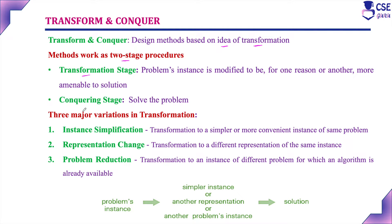Transform and conquer works under a two-stage process. The first stage is the transformation stage, where the given problem instance is modified into a simpler or more convenient form to find the solution. The second stage is the conquering stage, where the transformed problem is solved to find the solution.